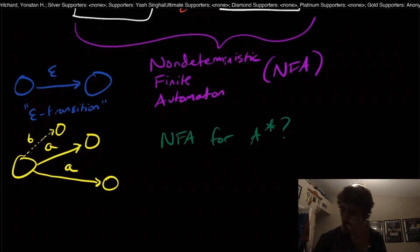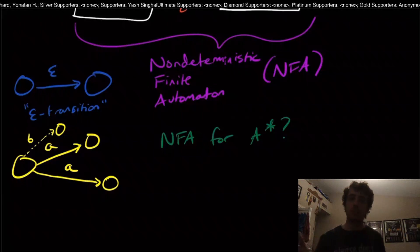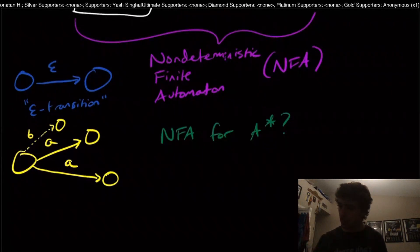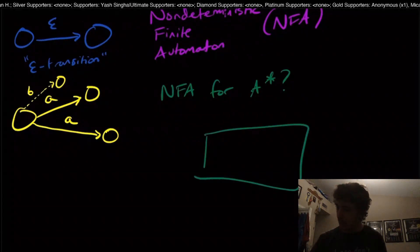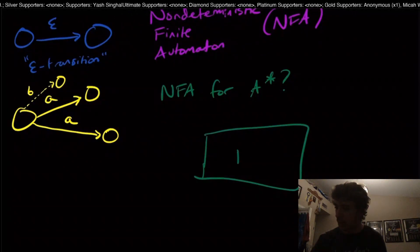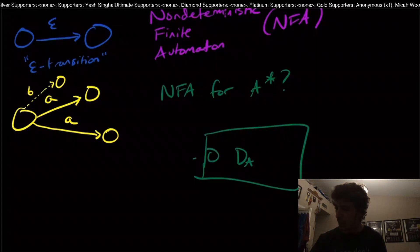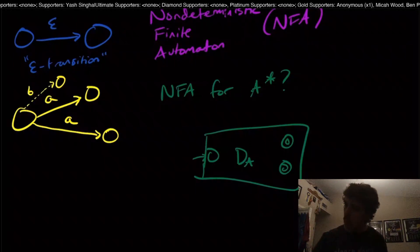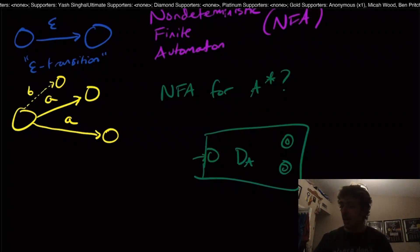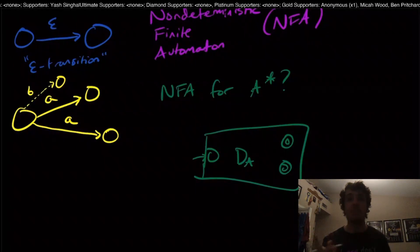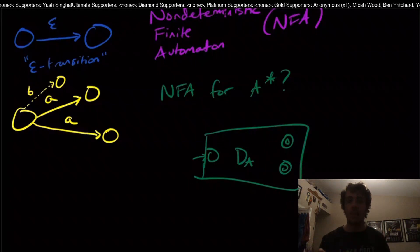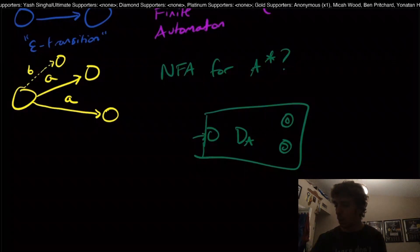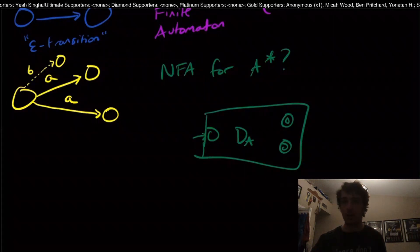How about NFA for A star? Remember star just means that you go through the machine as many times as you want. Let's say that we had a DFA for the language A right here, D sub A, and it has two final states just as an example. Here we need to accept the empty string no matter what, because the empty string is in the star of any language.